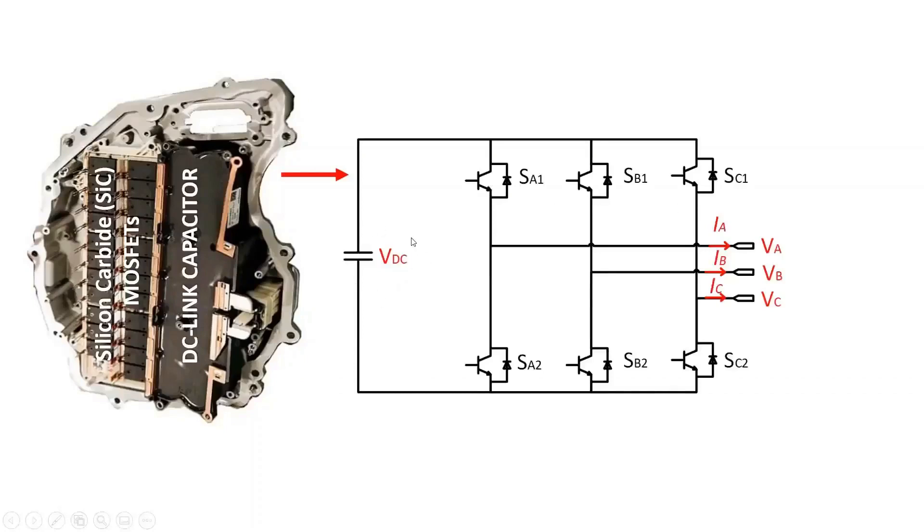The conventional three-phase two-level inverter consists of a DC-link voltage and six switching power semiconductor devices. In this case, a conventional two-level inverter structure with four MOSFETs parallel per switching device to handle the high current.